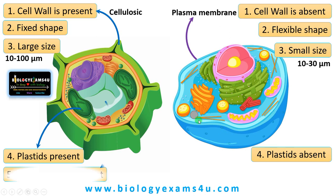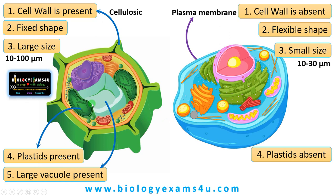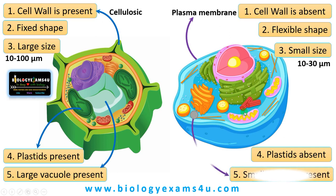The fifth difference is that there is a large central vacuole in plant cells, which has a prominent role in making the cell turgid. Whereas in animal cells, vacuoles are present but often very small.